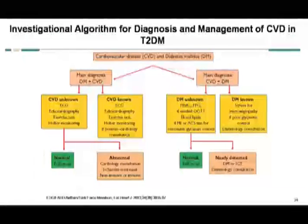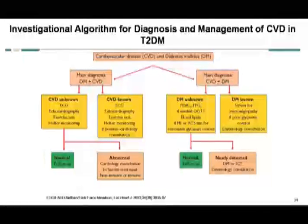This is the investigation algorithm for diagnosis and management of cardiovascular disease. One may get the diagnosis of diabetes mellitus first — in that case, you have to investigate on the cardiovascular disease line: ECG, echocardiography, and exercise tests at minimum. Or one may get cardiovascular disease earlier — then one has to investigate on the diabetes line: fasting plasma glucose, HbA1c, and the metabolic parameters.